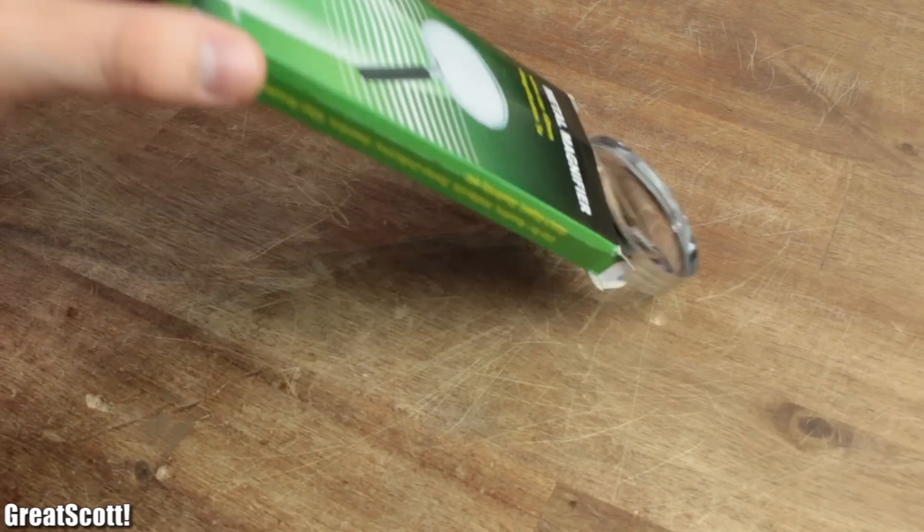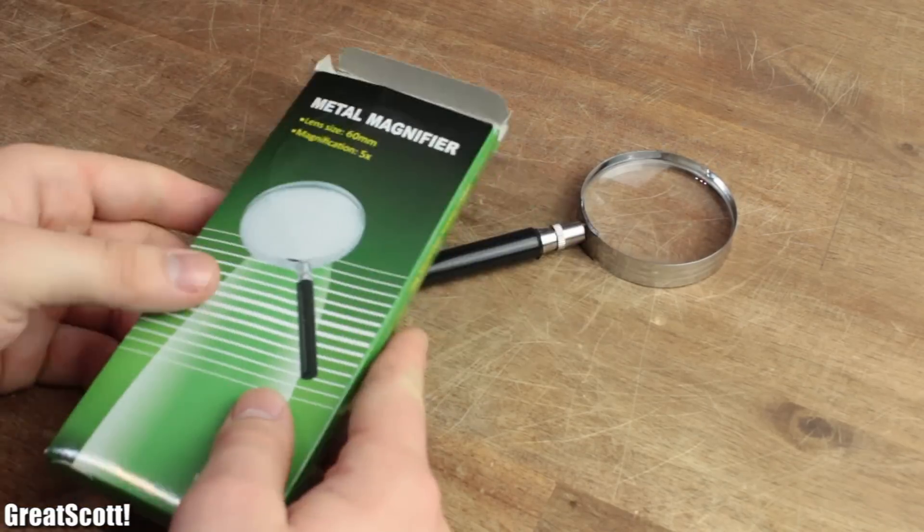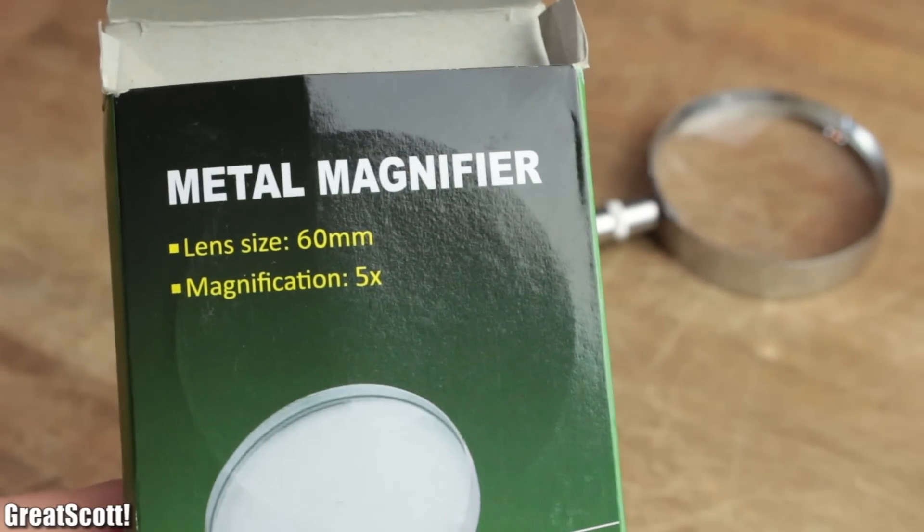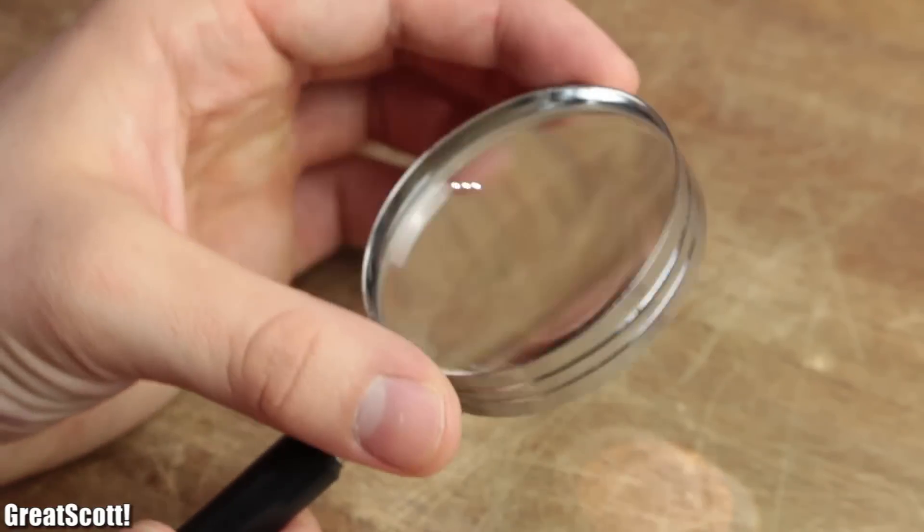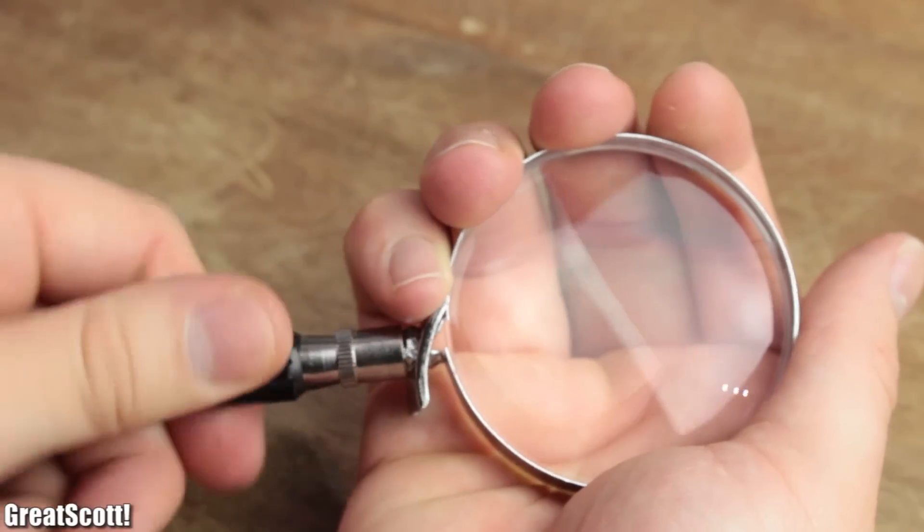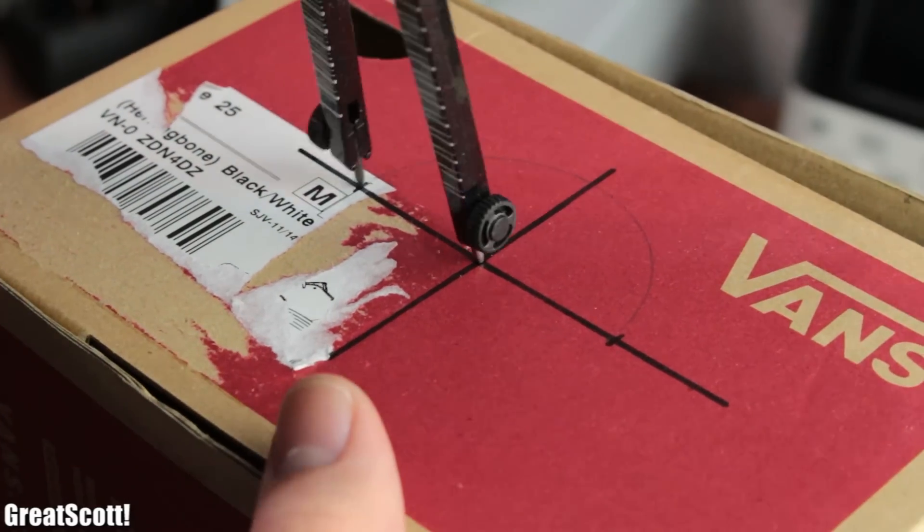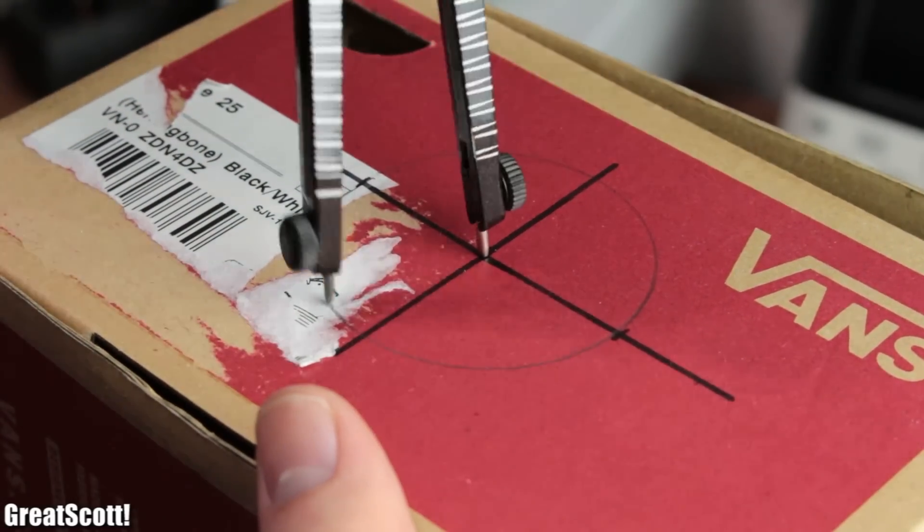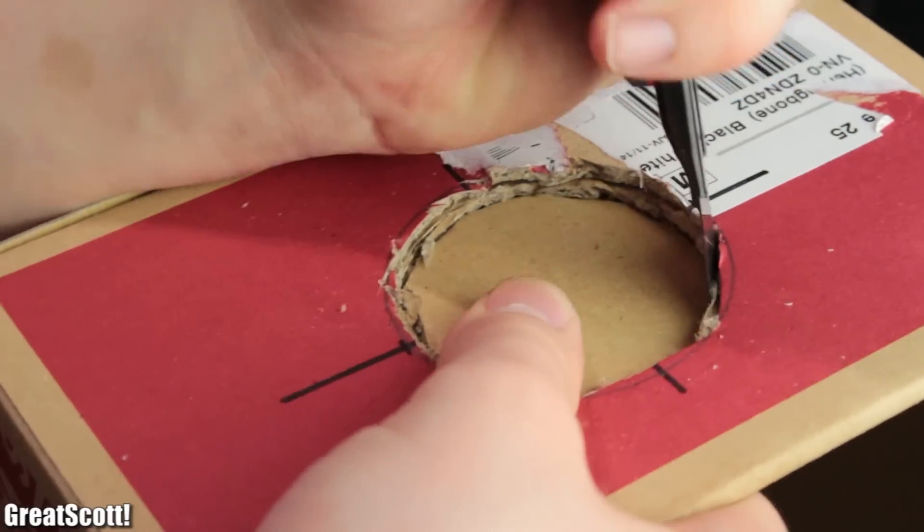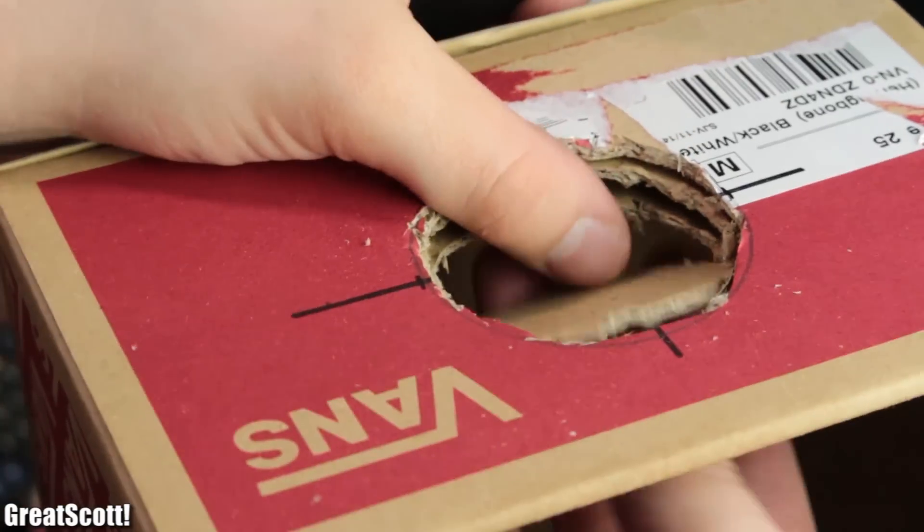That brings us to the last component, a magnifying lens, in this case with a magnification factor of 5 and a diameter of 60mm. I simply removed the handle of it and used a compass to draw a 62mm circle in the middle of the other small side of the shoebox. Then I used my trusty box cutter once again to create the hole.